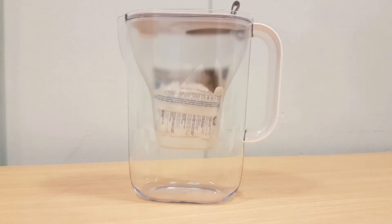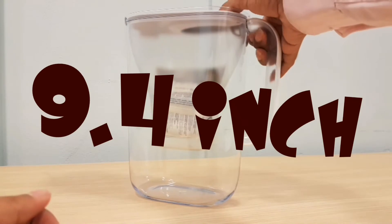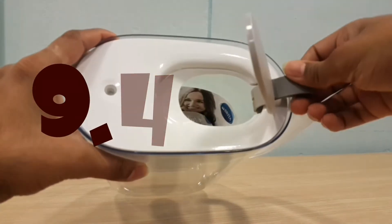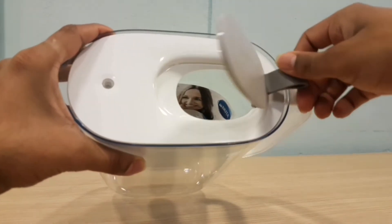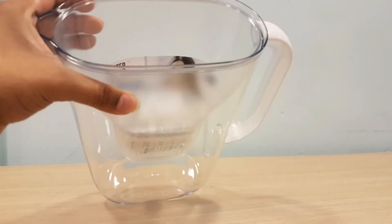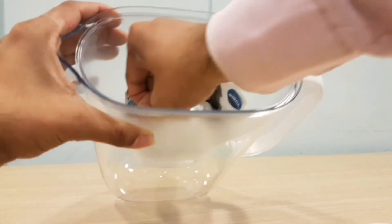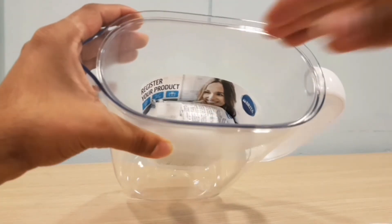It comes with the Maxtra filter as normal. Basically all you do is just lift this to add your water in. Same Maxtra cartridge - it drops in, you pull this off to take it off, simple.